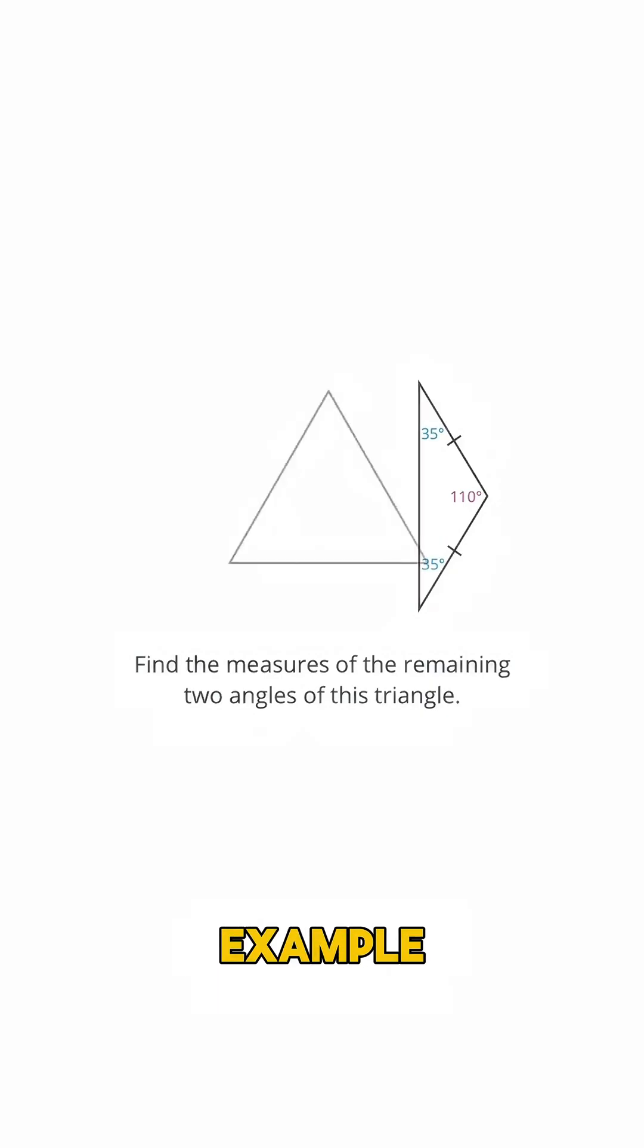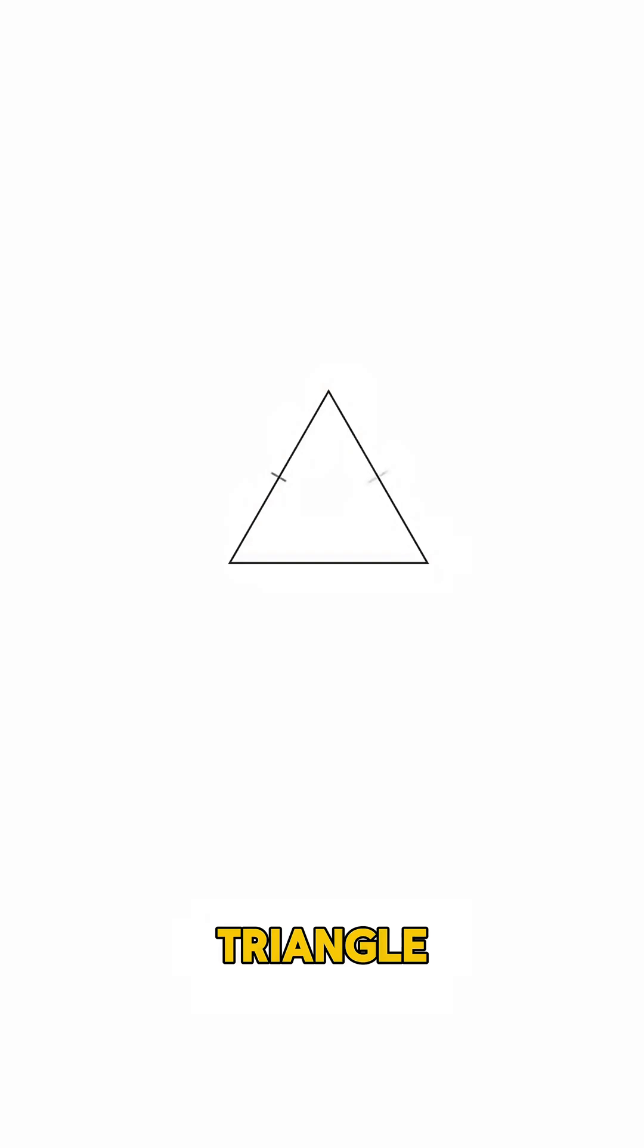Let's try one last example. Here's an equilateral triangle, meaning all three of its sides have the same length. Now because these two sides have the same length, that means the angle opposite this side has the same measure as the angle opposite this side. Similarly, because these two sides have the same length, that means the angle opposite this side has the same measure as the angle opposite this side.